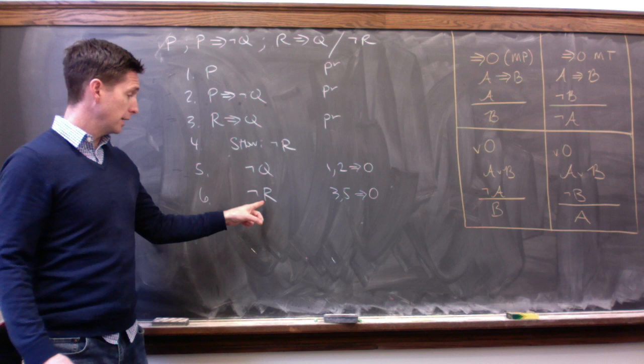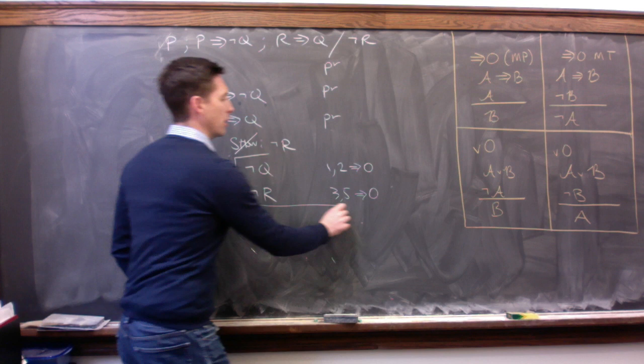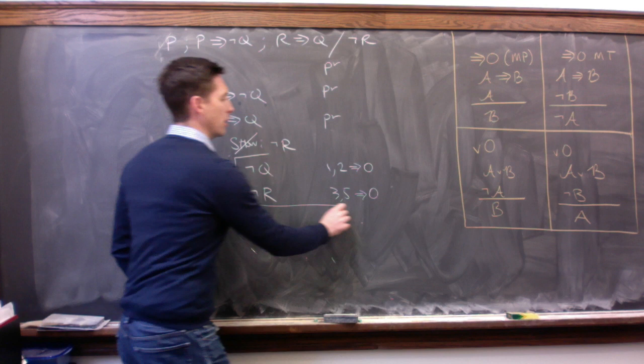And that's really good because we were trying to show not R up here and we were able to show not R. So we just need to complete our proof now. We cancel our show line. We box everything that came underneath that canceled show line. And we write DD again for direct derivation. Alright, in the next video I'll go through a few more of these simple derivations to see if we get the hang of it.